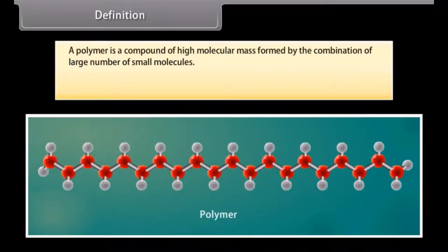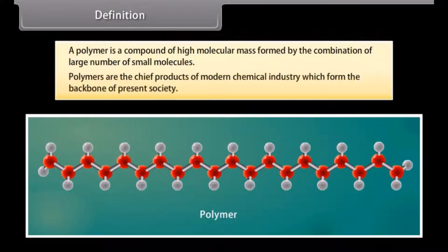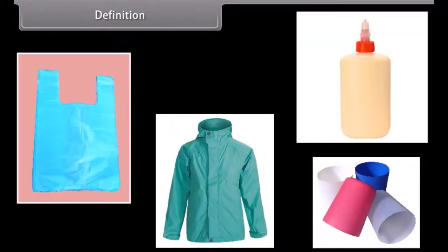A polymer is a compound of high molecular mass formed by the combination of a large number of small molecules. Polymers are the chief products of modern chemical industry, forming the backbone of present society. In everyday life, we use materials like plastic dishes, cups, automobile tires, seat covers, plastic bags, rain coats, radio, TV, and computer cabinets. Wide range of synthetic fibers, synthetic glues, flooring materials, and materials for biomedical and surgical operations are based on polymers.